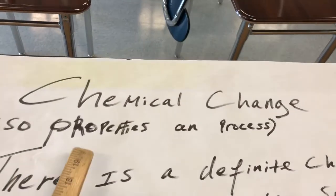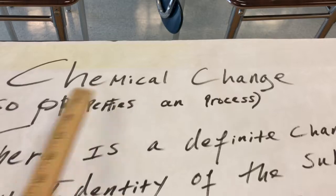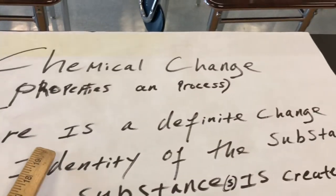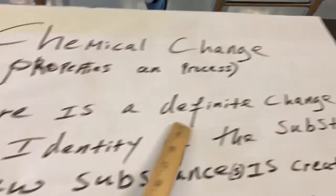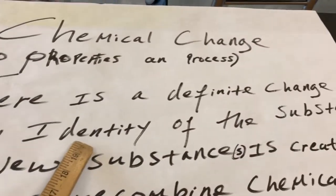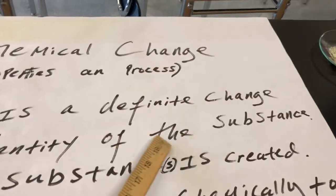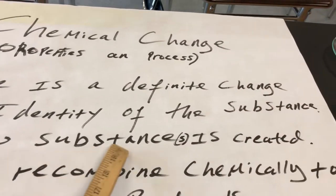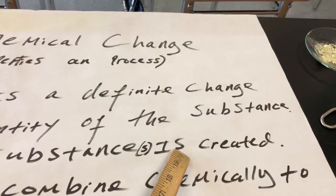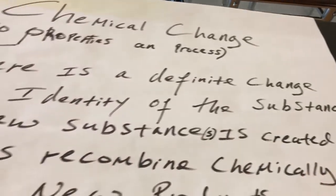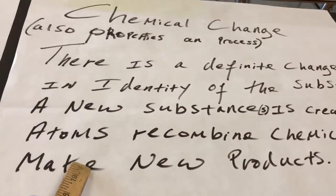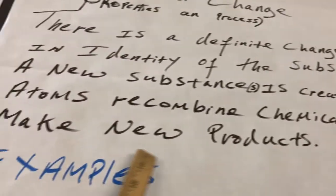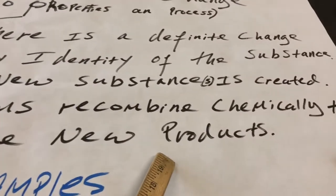Moving on to chemical changes or chemical properties or the chemical process, in a chemical process, there is a definite change in identity. The substance would have a definite change in identity and a new substance or substances will be created. The atoms in a chemical change are going to recombine chemically to create new products.